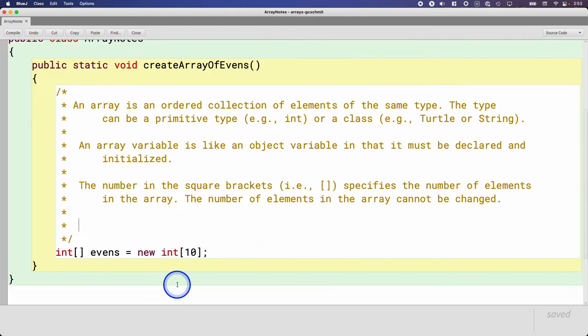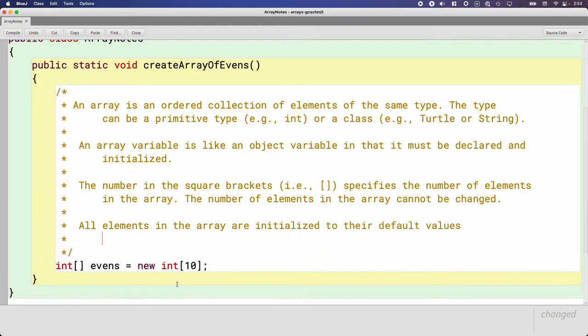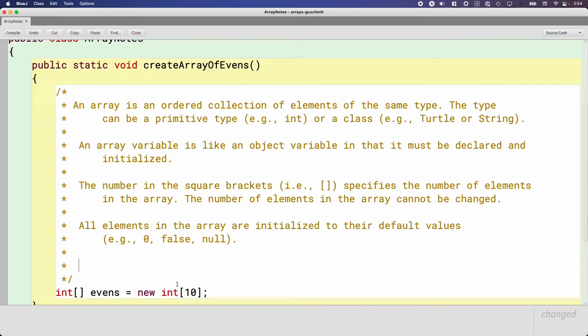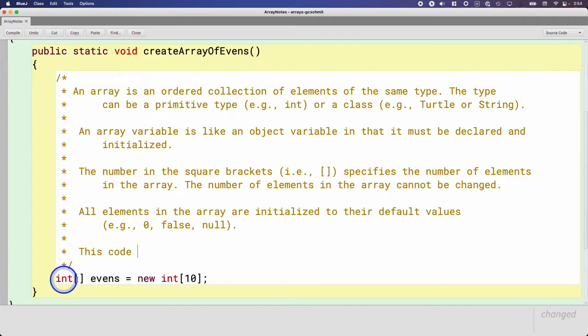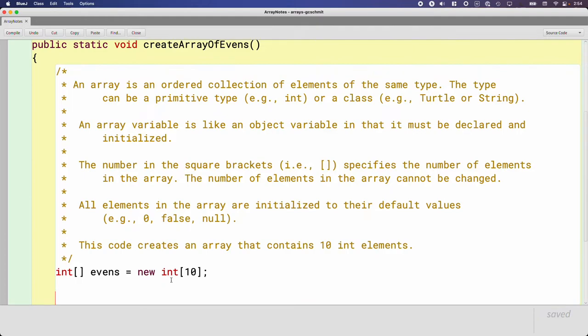So we've created our new array. So what's the value of all 10 elements? Well, all elements in the array are initialized to their default values. The same default values that they would be initialized to if they were instance variables. So for integers and doubles, that's zero. For Boolean types, that's false. For all class types, it's null. So this code, the code we started with earlier here, this code creates an array that contains 10 int elements.